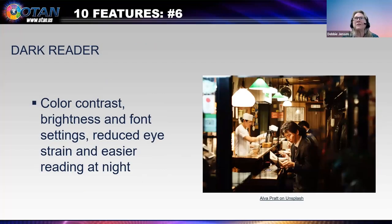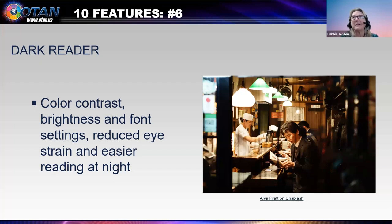On slide 12, we see a man at a food counter at night on his smartphone. This is feature number six: Dark Reader. It is an open-source extension used by many browsers. It inverts colors to make high contrast for less eye strain and easier reading at night. It adjusts brightness, contrast, and font settings. Last week, I was buying food for my roses and I couldn't read the print. Directions on the back of the bottle — color contrast and font size — are truly becoming more of an issue for me every day.